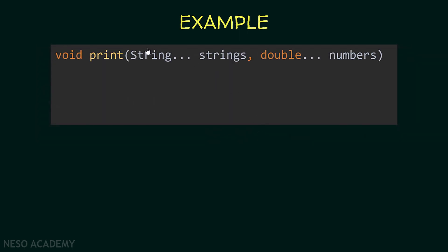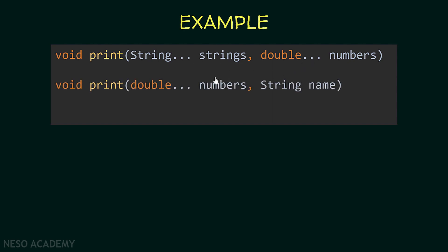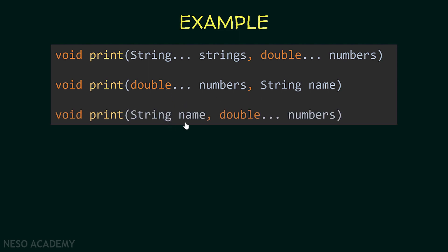Now let's see more error examples. Suppose you are defining a method called print with two variable length parameters — this code will give us a problem because only one variable length parameter can be specified in a method. Another example: passing two parameters where the variable length argument list is not last — this is also a problem because the variable length argument list must be the last parameter. The correct version puts the string parameter first, followed by the variable length argument list. All other parameters must be placed before the variable length argument list.